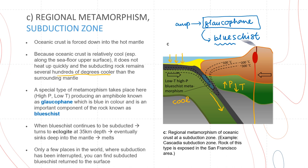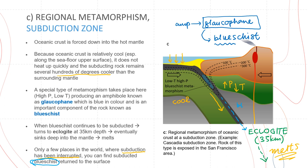When blueschist continues to be subducted, it turns into eclogite at about 35 kilometers depth. If eclogite continues to go further down, it sinks deep into the mantle and melts. Because of this process, only a few places in the world have subduction been interrupted such that blueschist is returned to the surface. The only way to find blueschist is to have the subduction process interrupted and the rock returned to the surface.